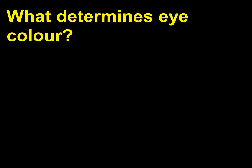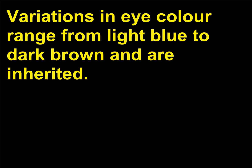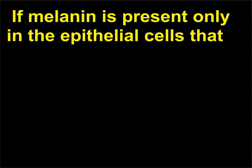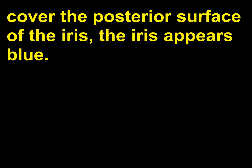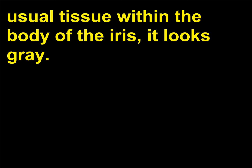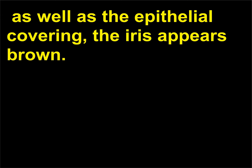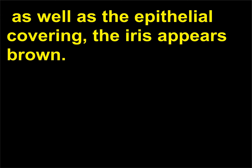What determines eye color? Variations in eye color range from light blue to dark brown and are inherited. Eye color is chiefly determined by the amount and distribution of melanin within the irises. If melanin is present only in the epithelial cells covering the posterior surface of the iris, the iris appears blue. When this condition exists together with denser-than-usual tissue within the body of the iris, it looks grey. When melanin is present within the body of the iris as well as the epithelial covering, the iris appears brown. Green and hazel eyes result from an increase in the amount of a combination of yellow and black melanin.